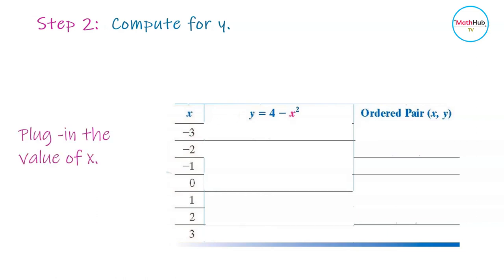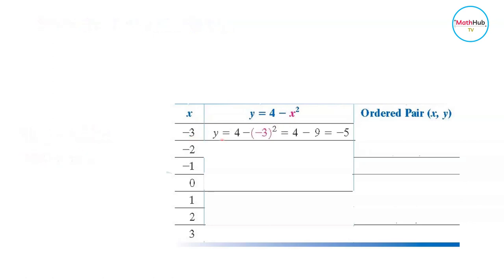You have to plug in x, meaning replace x by this value here. So you have y equals 4 minus quantity negative 3 squared. You have a quantity here because this is a negative number, and that number will be squared. So negative 3 squared is 9, and 4 minus 9 equals negative 5.